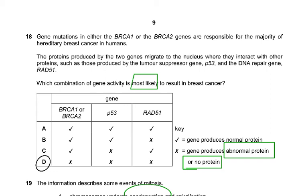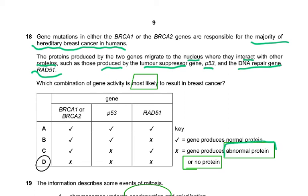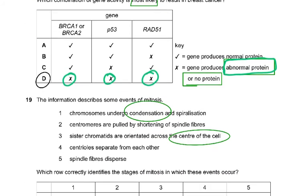Question eighteen: mutations in BRCA1 or BRCA2 genes are responsible for the majority of hereditary breast cancers. The proteins from these genes migrate to the nucleus and interact with tumour suppressor gene p53 and DNA repair gene RAD51. The combination most likely to result in breast cancer involves abnormal or absent protein production from these genes. If all relevant genes produce abnormal or no protein, that combination would result in cancer.